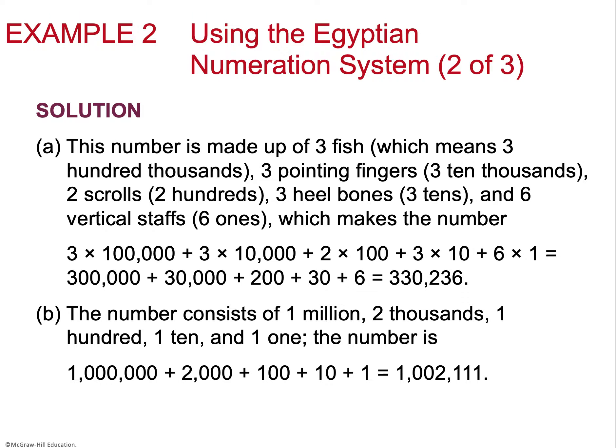To find the numerical value of Egyptian numerals, I use the symbol table. For example, 3 fish means 300,000 (3 × 100,000), 3 pointing fingers is 30,000 (3 × 10,000), 2 scrolls is 200 (2 × 100), 3 heel bones is 30 (3 × 10), and 6 vertical staffs is 6. Adding those up gives 330,236. This is essentially place value — 3 times 100,000 means the 100,000s place holds a 3.